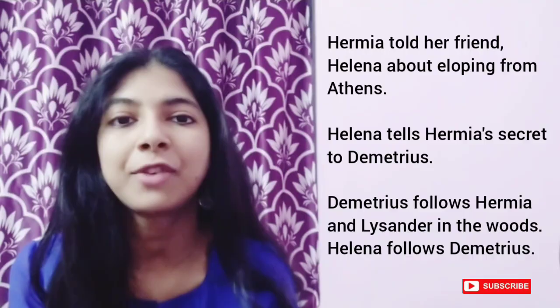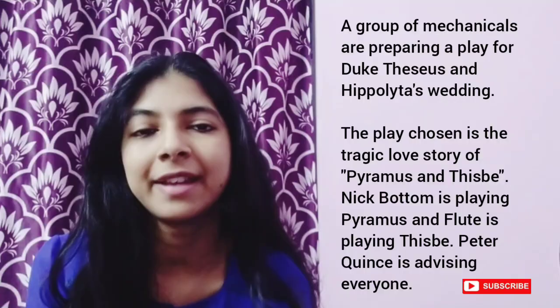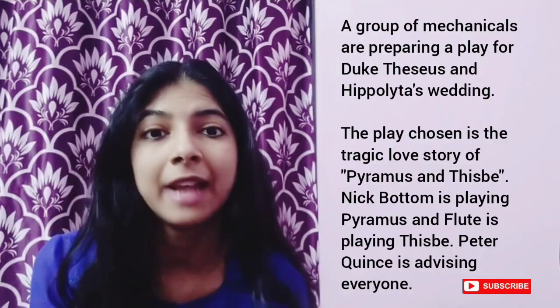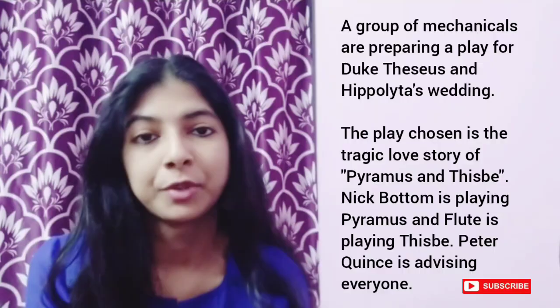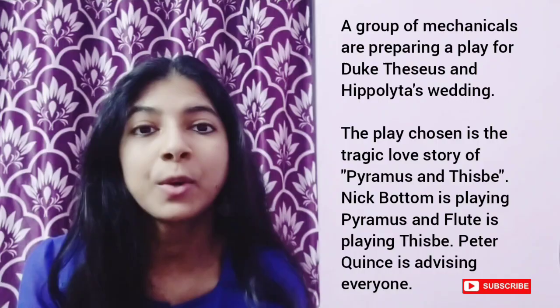Helena also follows Demetrius in the hope that someday Demetrius will choose her and not Hermia. Meanwhile, a group of mechanicals or laborers are doing rehearsal for a play they want to perform at Duke Theseus and Hippolyta's wedding. The play they have chosen is the tragic love story of Pyramus and Thisbe. Nick Bottom, a weaver, is playing the role of Pyramus; Francis Flute, a bellows mender, is playing the role of Thisbe; and Peter Quince, the carpenter, is advising everybody on how to act.